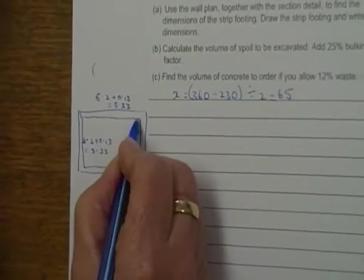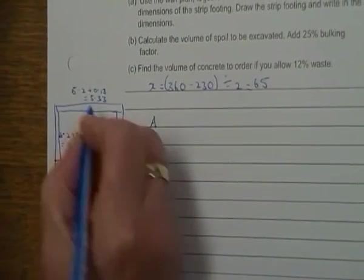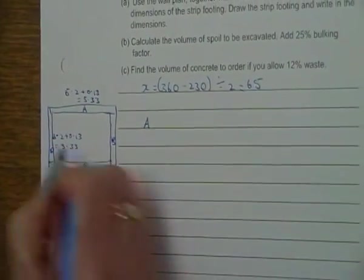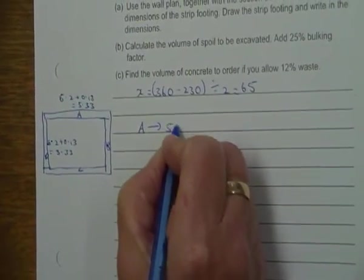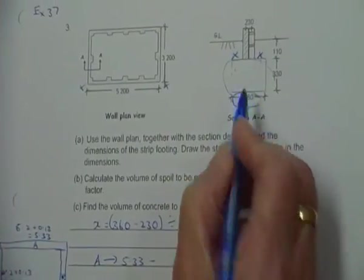Then we do our intos and overs, so if I look at A, B, C, and D. A, I'm going 5.33, and I'm minusing the width of the footing, so 0.36.